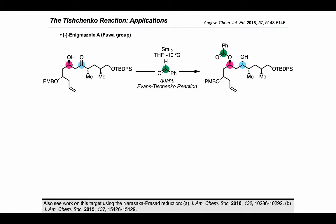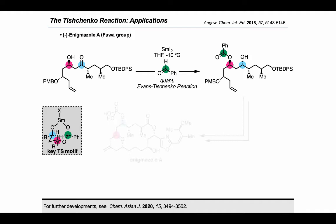Next, let's have a look at the Fula group's approach to enigmozole A. Here we see a beta-hydroxy ketone starting material being used with a cheap and abundant aldehyde in an Evans-Tyshenko reaction, which resulted in the simultaneous protection of the alcohol marked with the pink circle, as well as the reduction of the ketone marked with the blue circle. We can envision this happening through a familiar bicyclic transition state motif to arrive at the desired product, which could be used to reach enigmozole A.